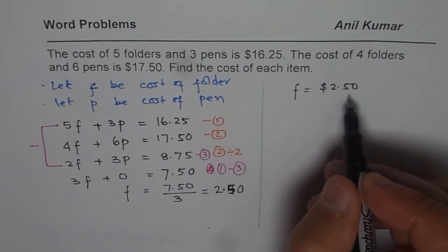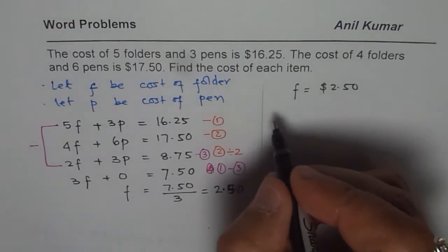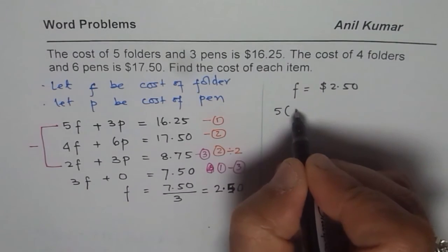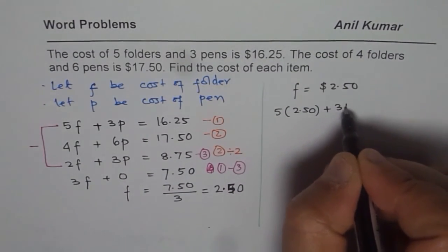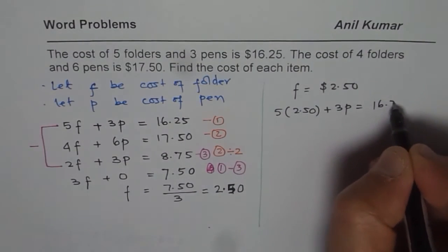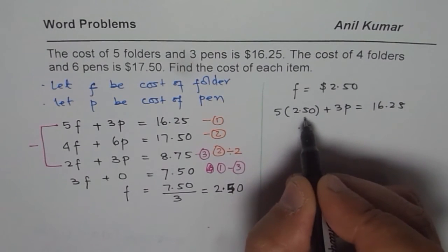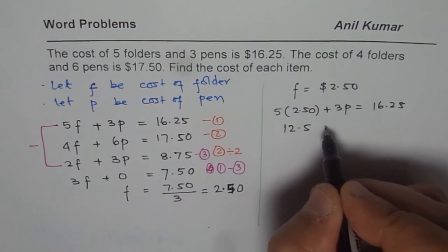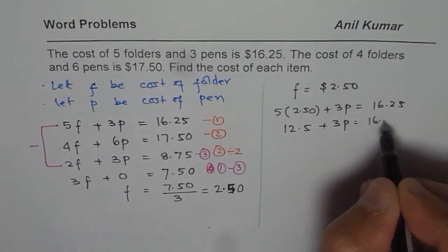Now we can substitute F as 2.5 in one of our equations and calculate. So let us use the first equation itself, which is 5 times 2.5 now. Let us try 2.50 plus 3P equals 16.25. So when you multiply this by 5, you get 0.5. 5 times 5 is 25. 5 times 2 is 12.